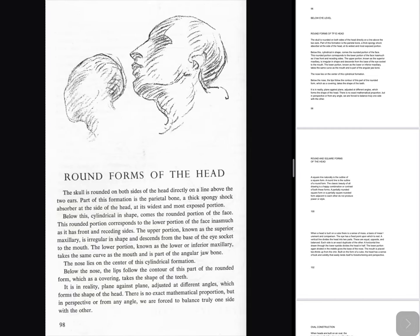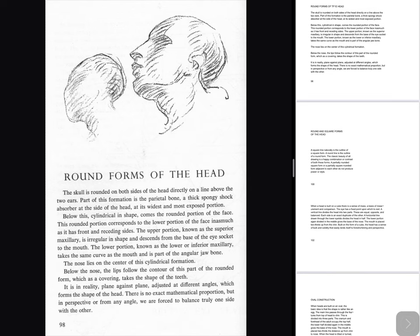Round forms of the head: The skull is rounded on both sides of the head directly on a line above the two ears. Part of this formation is the parietal bone, a thick spongy shock absorber at the side of the head, at its widest and most exposed portion. Below this, cylindrical in shape, comes the rounded portion of the face. This rounded portion corresponds to the lower portion of the face in as much as it has front and receding sides. The upper portion, known as the superior maxillary, is irregular in shape and descends from the base of the eye socket to the mouth. The lower portion, known as the lower or inferior maxillary, takes the same curve as the mouth and is part of the angular jaw bone. The nose lies on the center of this cylindrical formation. Below the nose, the lips follow the contour of this part of the rounded form. It is in reality plane against plane, adjusted at different angles, which forms the shape of the head. There is no exact mathematical proportion, but in perspective or from any angle, we are forced to balance truly one side with the other.